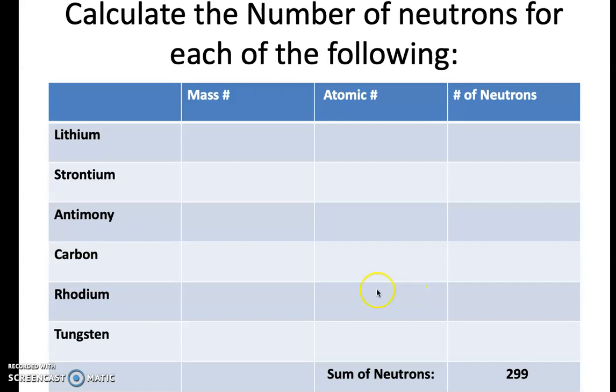So let's look here. We have your mass column, atomic number column, number of neutrons column. We are going to use our periodic table, and we're going to fill this up. So let me grab my little pen. The mass number of lithium is 7. The atomic number is 3. So we subtract these two, 7 minus 3, and we get 4 neutrons.